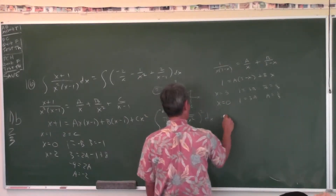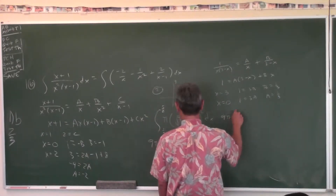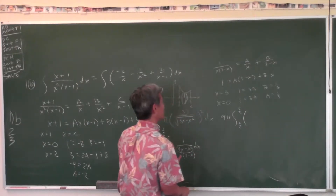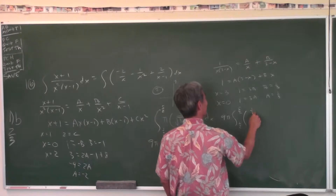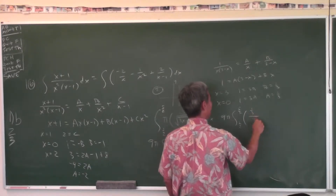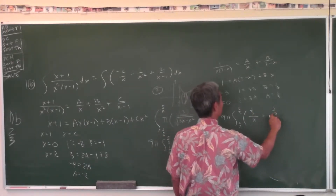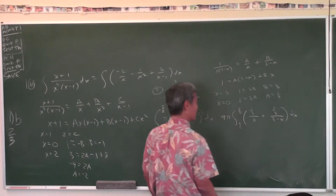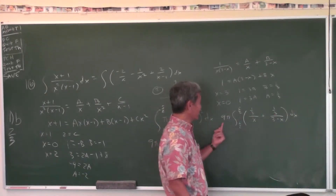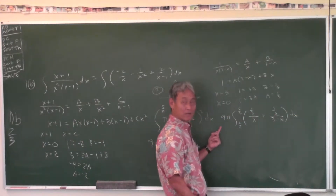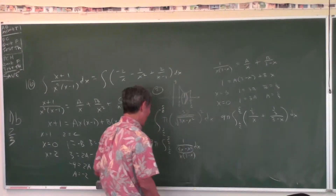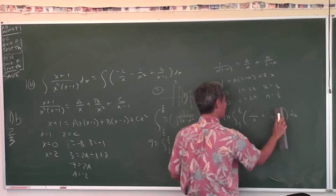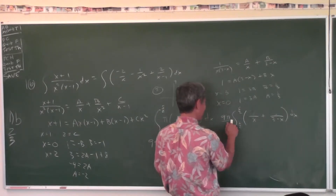So the integral is 9π times the integral from 1/2 to 5/2. When decomposed, you get (1/3) over X plus (1/3) over (3 minus X). Take the 1/3 and put it outside with the constant — I'd rather just throw it out here.